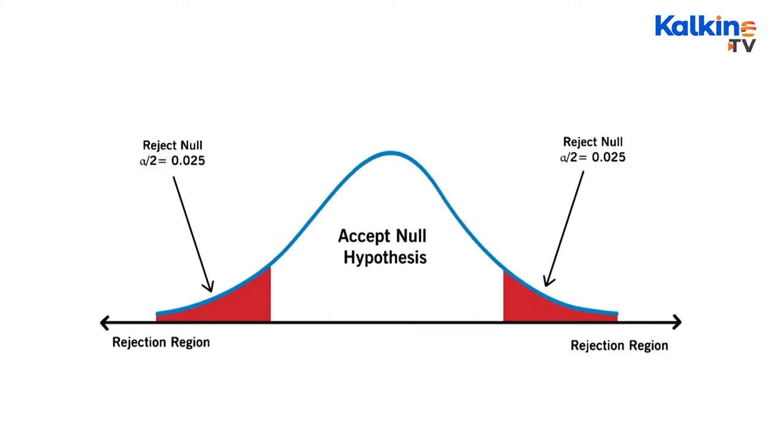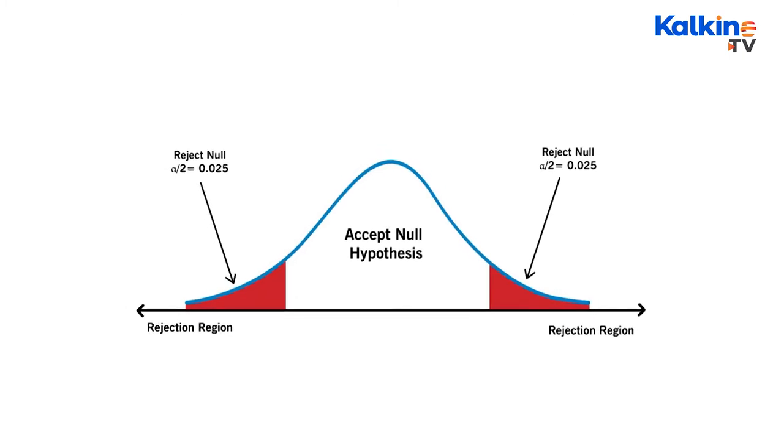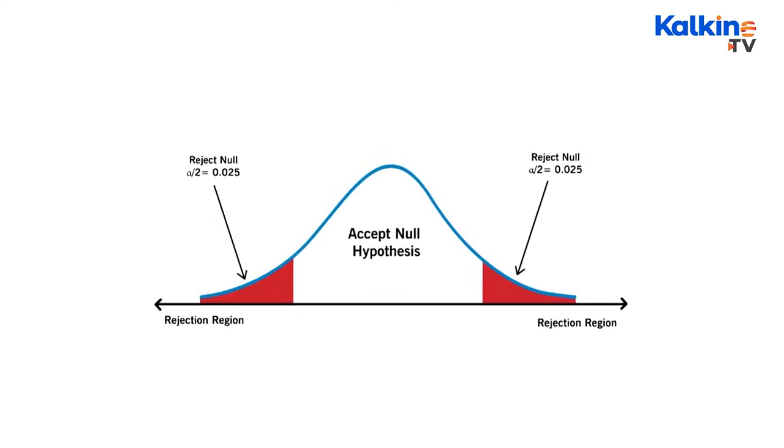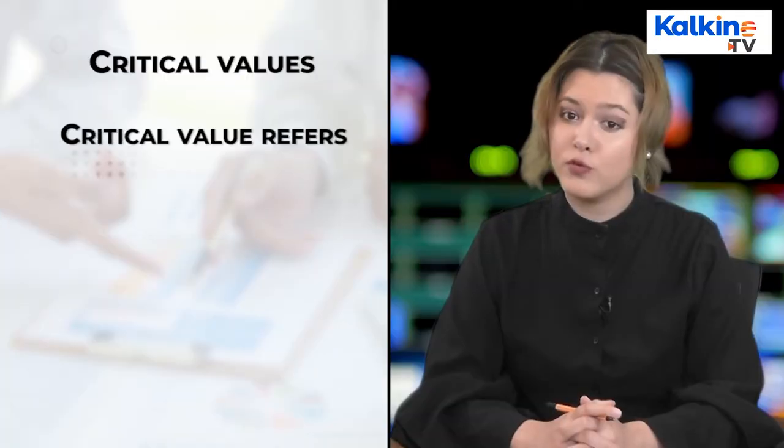In a two-tailed test, the critical area of distribution is two-sided. It tests whether the sample is less than or greater than a range of values. While using this in null hypothesis testing and testing for statistical significance, if the sample tested falls in the range of either of the critical regions, then we choose an alternate hypothesis instead of a null hypothesis.